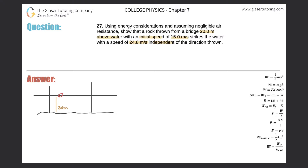Since it says to use energy considerations, we're thinking in terms of kinetic energy and potential energy — those formulas are on the right-hand side. With negligible air resistance and no friction, the energies in this problem are balanced, so I can write a general equation: initial energy of the system equals final energy of the system.